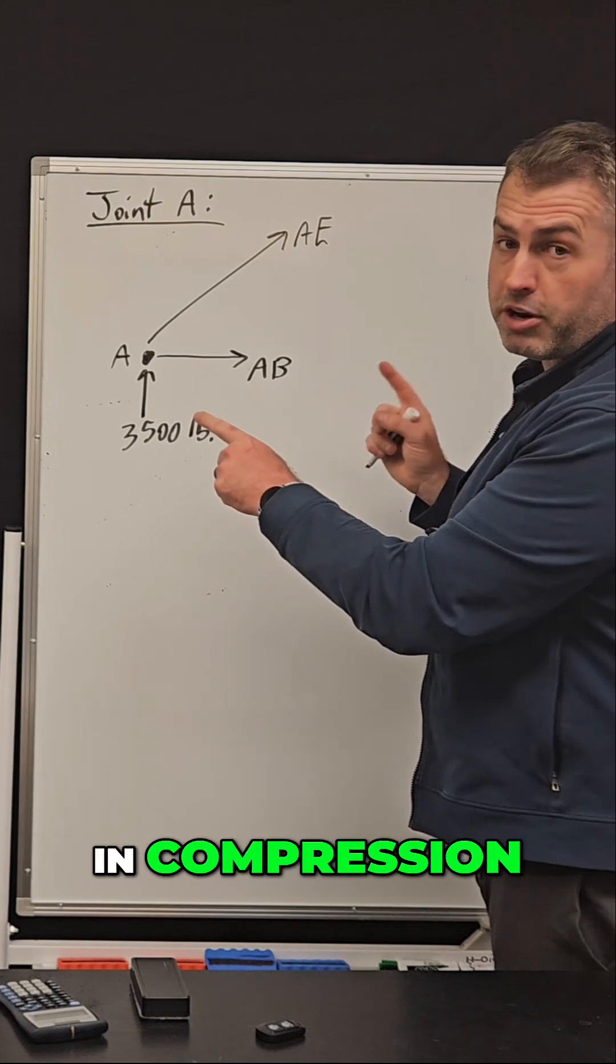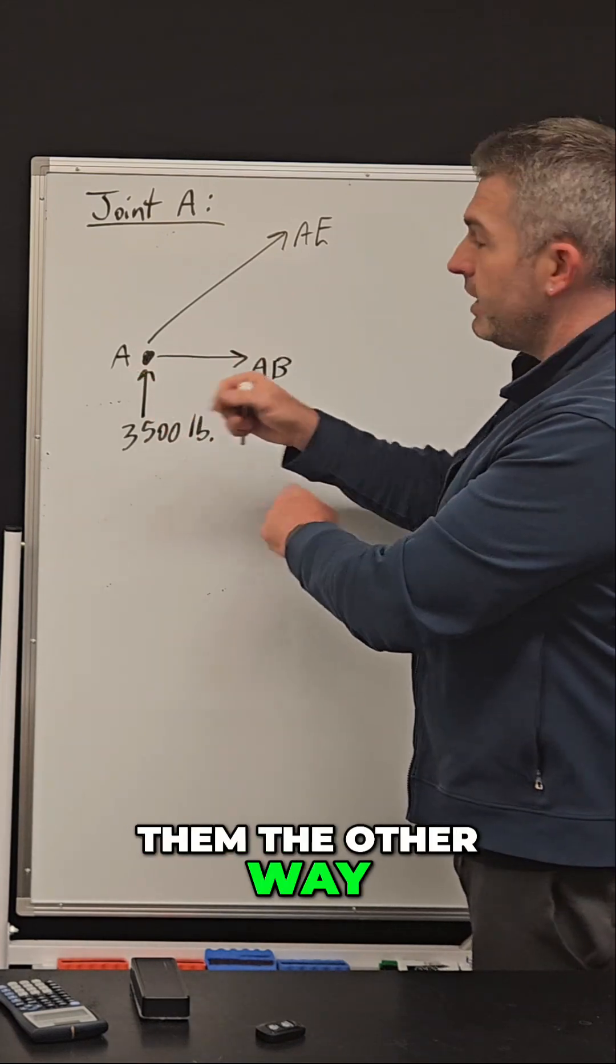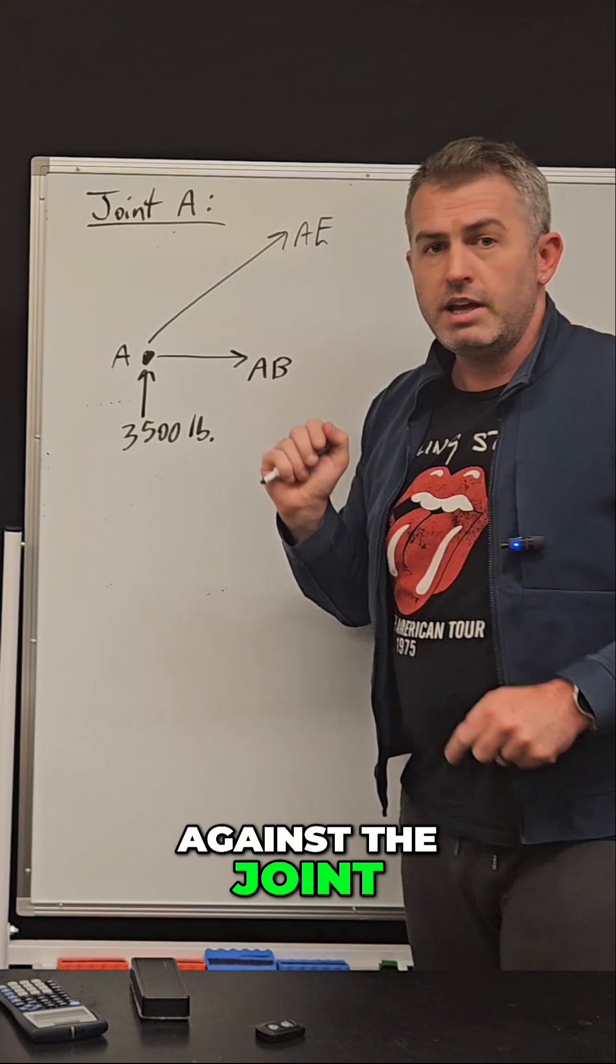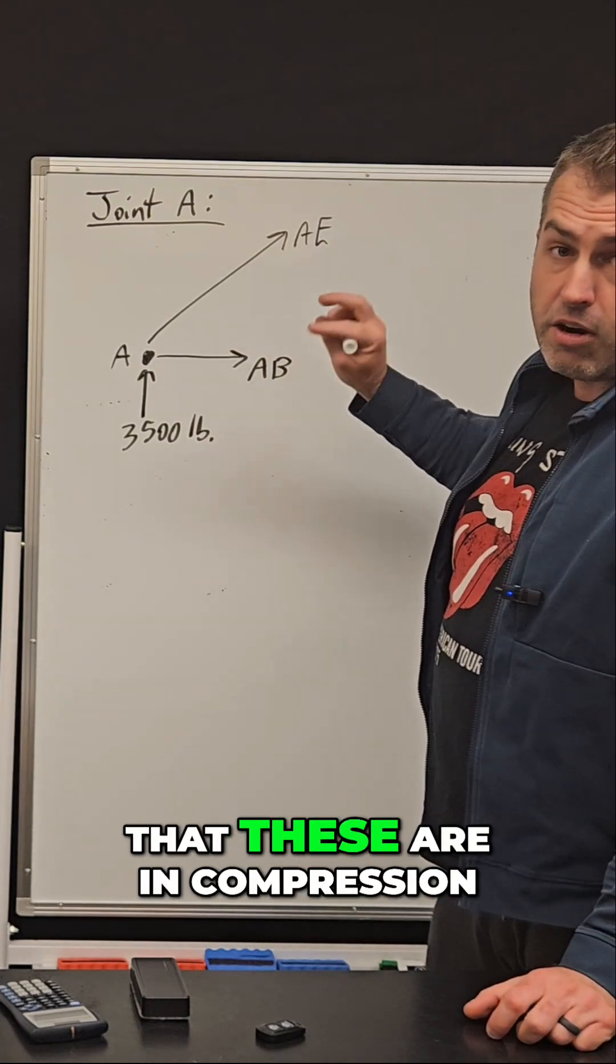Now if these members were in compression I would have drawn them the other way. Instead of pulling away from the joint they would be pushing against the joint. Now it may turn out that these are in compression.